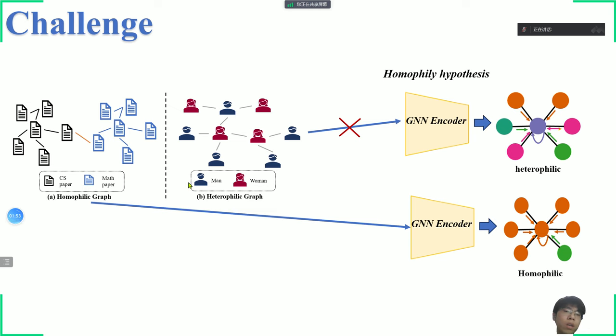However, traditional Graph Contrastive Learning often encounters challenges when dealing with heterophilic graphs, where nodes with similar characteristics are interconnected. This challenge arises due to the indiscriminate treatment of edges in existing frameworks, overlooking the presence of heterophilic edges connecting these similar nodes. Our aim is to enhance the effectiveness and adaptability of Graph Contrastive Learning, particularly in heterophilic graphs.